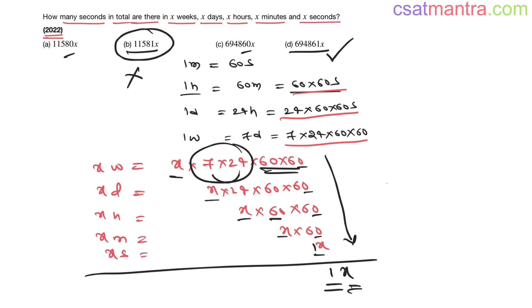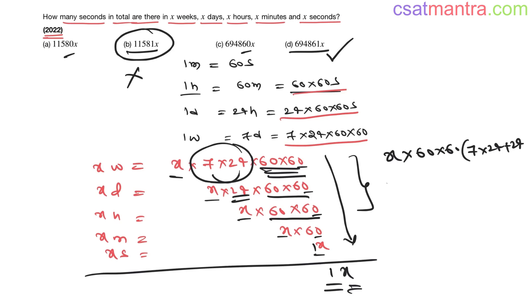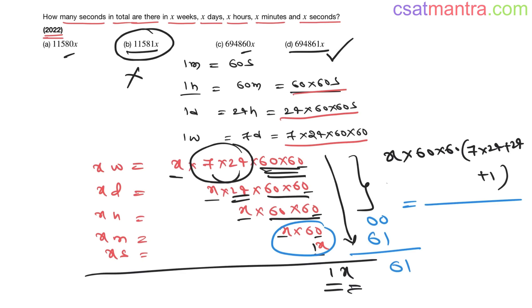You have 60 into 60 common in three of the terms — take that outside: x into 60 into 60 into (7 into 24 plus 24 plus 1). Now see this sum — the last two digits of 3600 times something would be zeros, so the last two digits come from 61x. That gives 61x as the last digits.